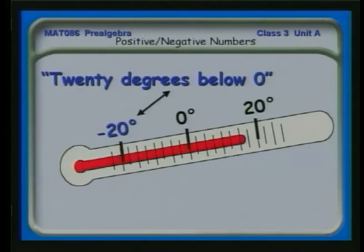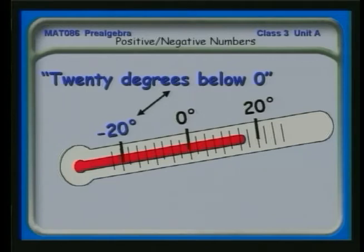These are things you've already seen. For example, we talk about degrees below zero. On our scale, zero is pretty cold. We don't see it much here in Tucson, if at all. But what about 20 degrees below zero? There are certainly many parts of the country that get temperatures like that, and every winter we have people coming here to escape from those below-zero temperatures.